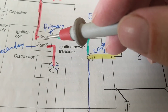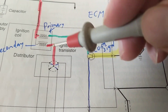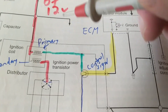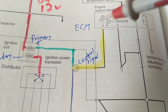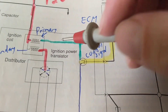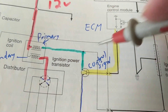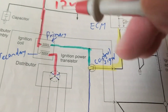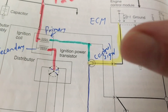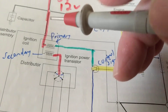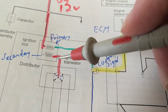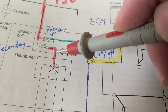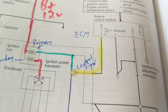I would go to the secondary to make sure there's a high induced voltage spark. I would not go to the primary because that's just 12 volts from the battery. You should see a signal from the computer there. The theory is: go to the output of the ignition coil — the secondary — and see if there's a spark.